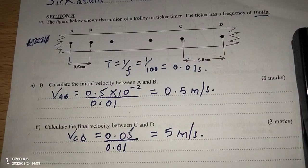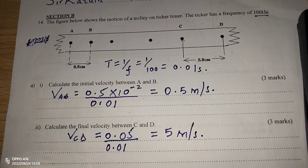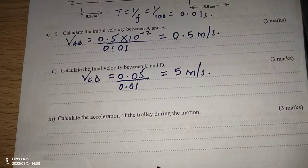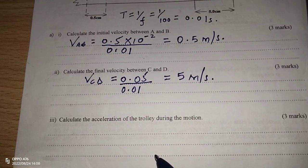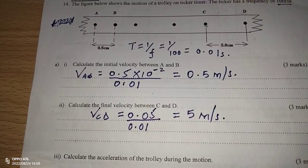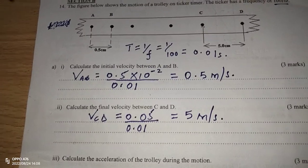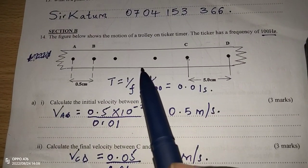Therefore, now we have final velocity and initial velocity. The last question is telling us to calculate the acceleration of the trolley during the motion. For us to get acceleration, we have to get final velocity minus initial velocity divided by the time taken. Now, when we look at the diagram, we need to calculate the time taken.